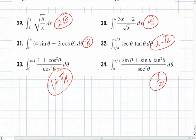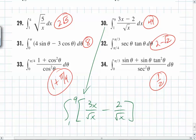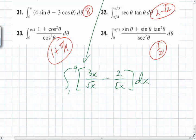All you do to set 30 up is you turn it into the integral from 1 to 9 of 3x over root x minus 2 over root x. And then it simplifies. And then it's just a straightforward integration.